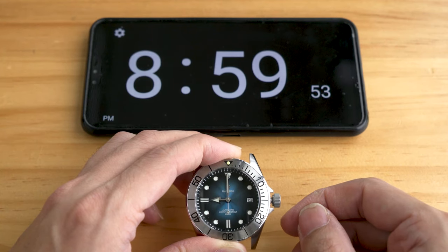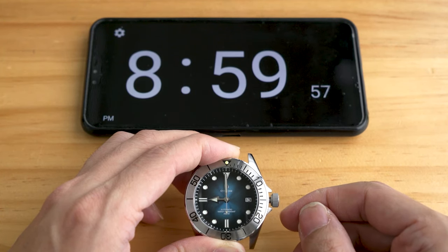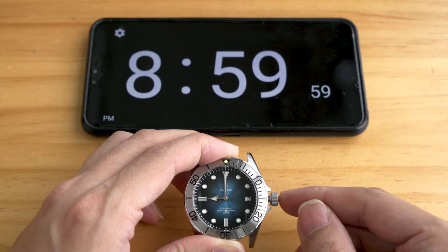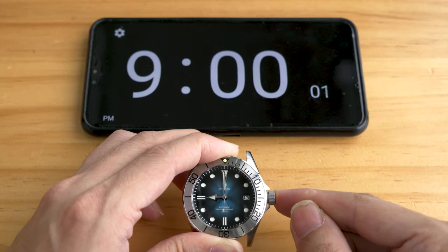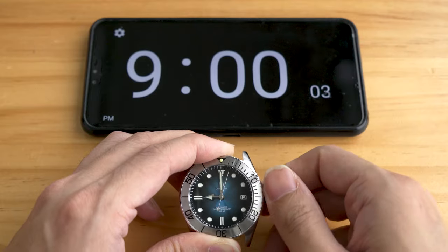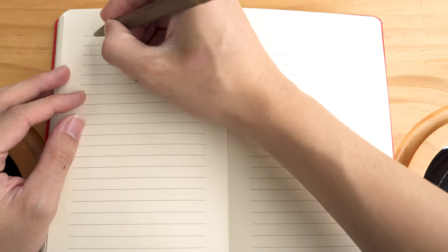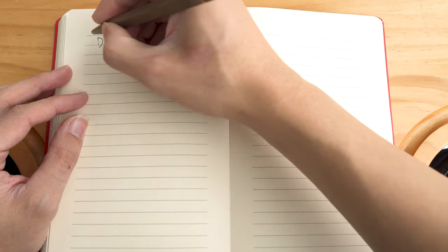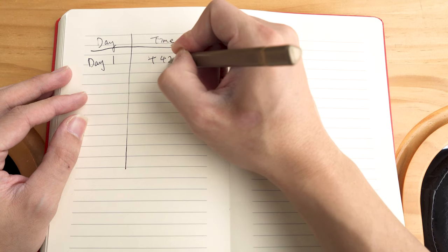On the first day, you'll set the time of the watch to a credible, reliable time source, like an observatory clock, or the internet clock. Give it a full wind, and then check the time again at the same time next day. You'll then find out the deviation per day in seconds.